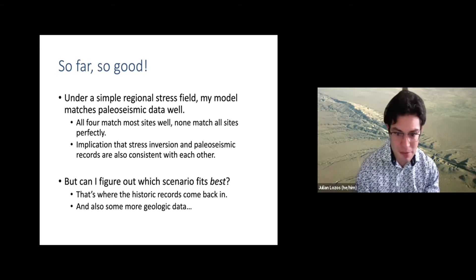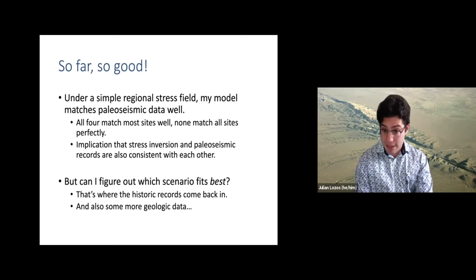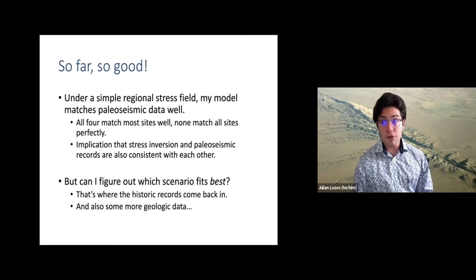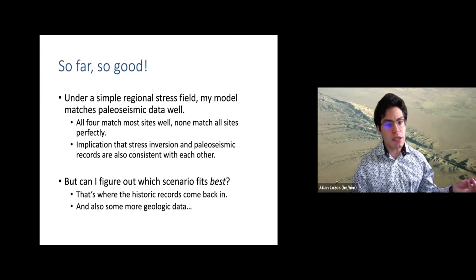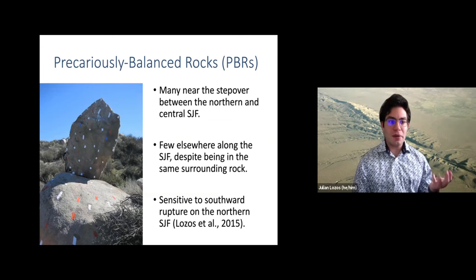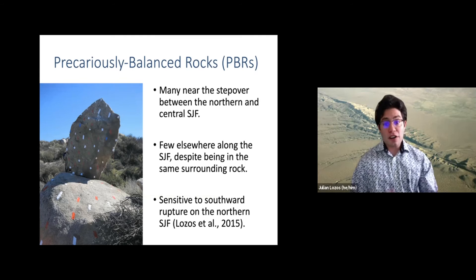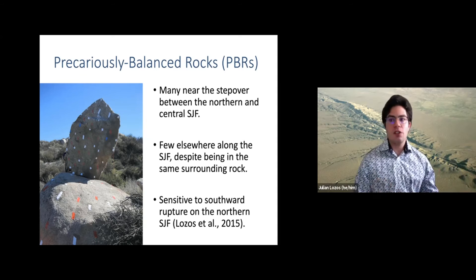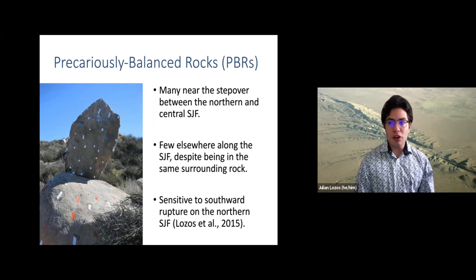Using modern initial conditions can help tell us some things, but I felt like I could go further and get at the question of which scenario fits best, because now I have four possible multi-fault rupture options. In order to figure out what fits best, I'm going to bring the historic records back into the picture and also some more geologic data in the form of precariously balanced rocks. Around the step-over between the northern and central San Jacinto, there are a lot of these precariously balanced rocks, but very few elsewhere along the San Jacinto.